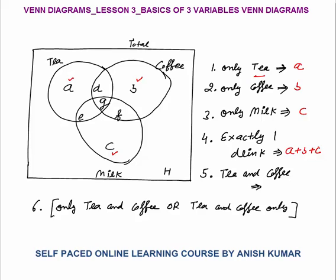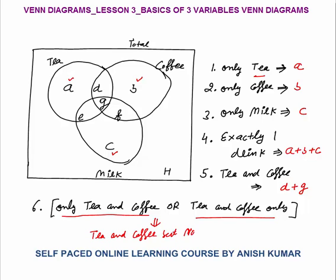Tea and coffee — it's very important. When I say tea and coffee, it means the common part in the circles of tea and coffee, and that would be D plus G. This complete part would be tea and coffee. Now, only tea and coffee — or tea and coffee only — they mean the same thing. It actually means tea and coffee but not milk, so its value will be D.